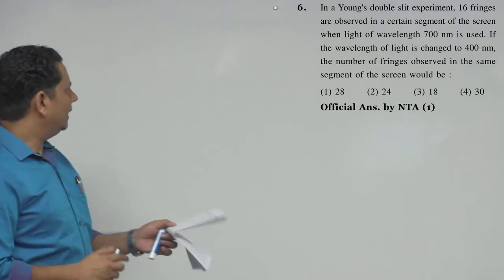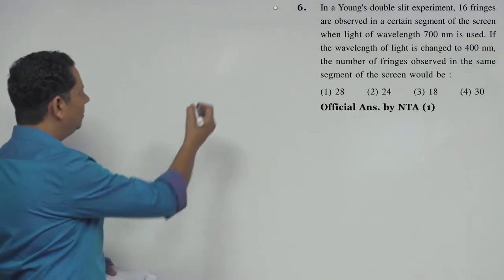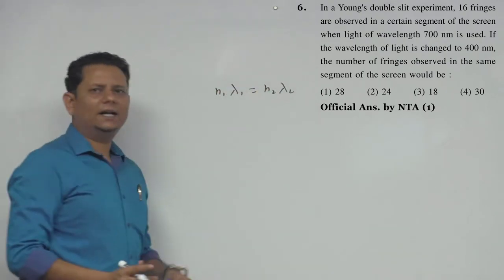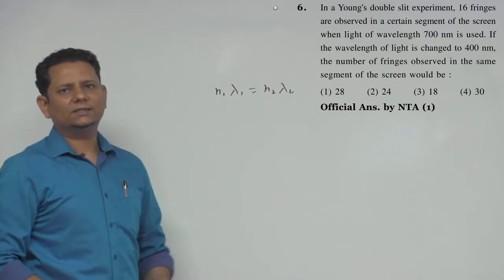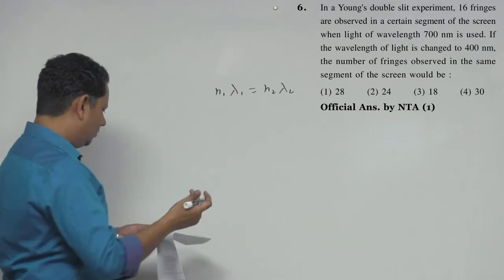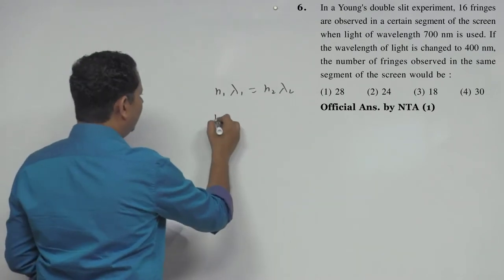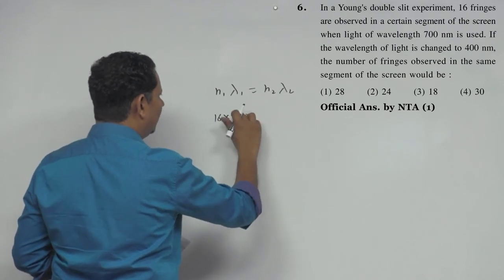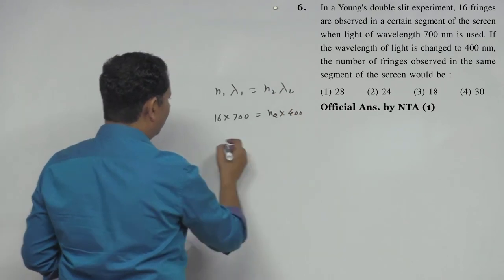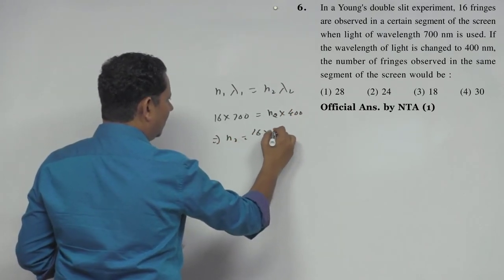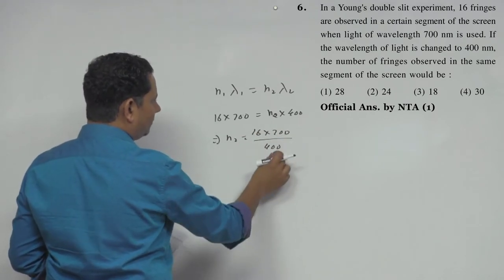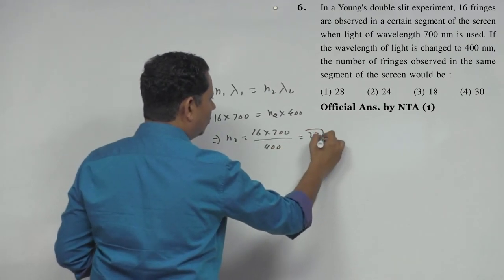It's a very simple question. That will be equal to 16 multiplied by 700 divided by 400. So 20 is cancelled, and this will be 4. So that will be equal to 28.